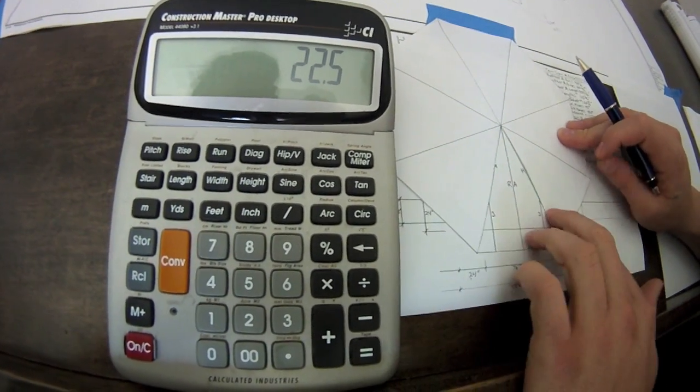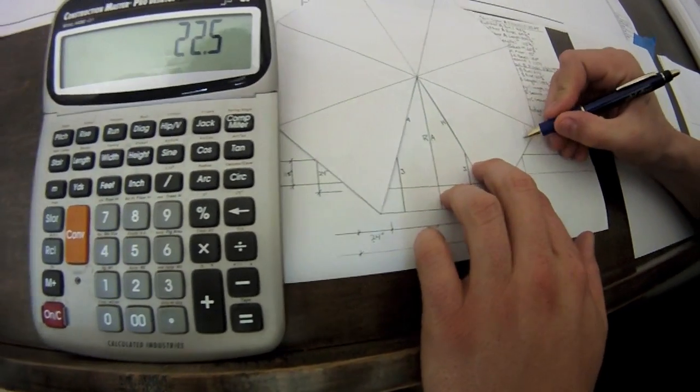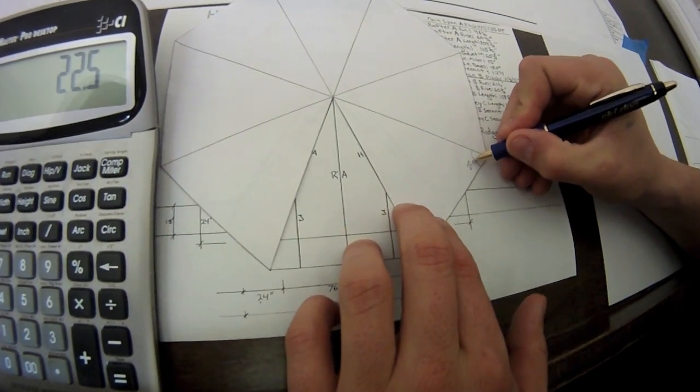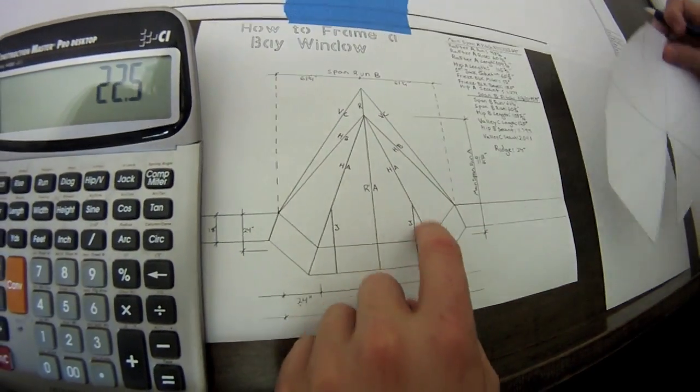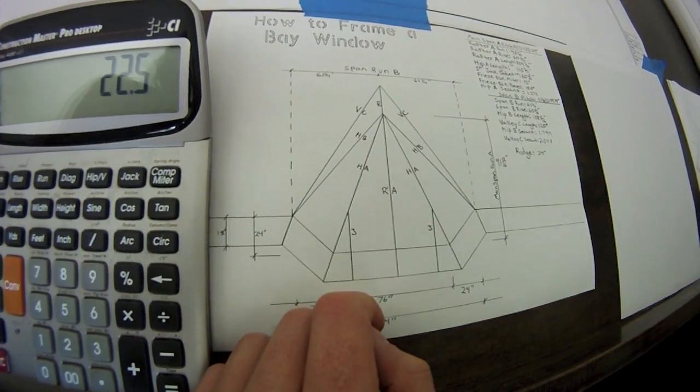So you're going to divide that by two and you end up with twenty two and a half. So now that we know we have a twenty two and a half degree angle that these hips run at, and that's exactly what we want these hips to run at here so that everything works out right.